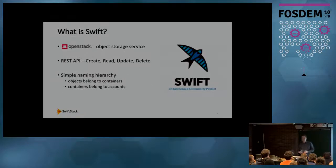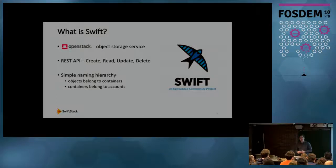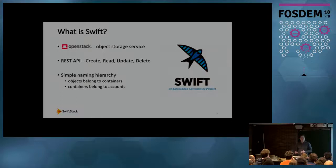So what is Swift? Swift is an object storage service. It's great for storing blobs of unstructured data — pictures, media files, virtual machine images, whatever it might be. It was one of the founding projects of the OpenStack cloud software suite and it's been around in production for seven or eight years. Swift offers a REST API accessed over HTTP with standard operations to create objects, read them back, update them, and delete them.